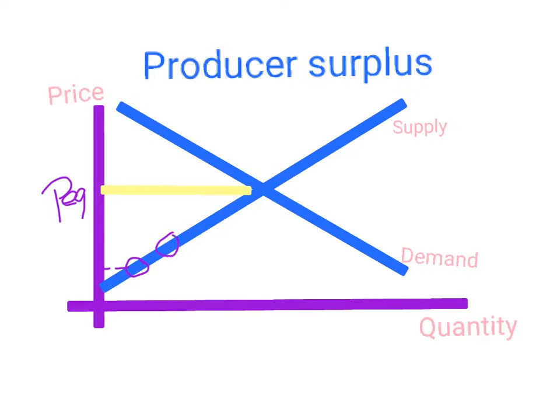Some producers were willing to sell the product for this price here. What they're actually getting is this price, so they're getting a higher price. All these companies that were willing to sell their product for a lower price are getting significant benefit from selling the product at the actual equilibrium price.